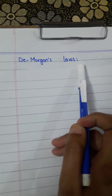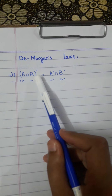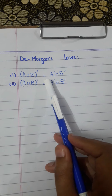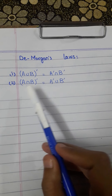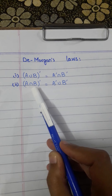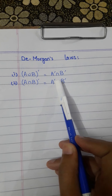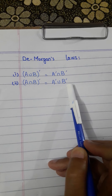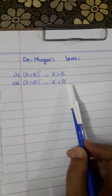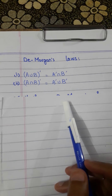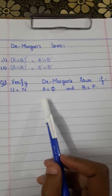We are starting De Morgan's Laws. The first De Morgan Law is: (A∪B)' = A'∩B'. The second law is: (A∩B)' = A'∪B'. Now look at question number 5 of exercise 1.2.